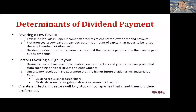Then why do firms have different dividend policies? There are certain investors who prefer low payout. Individuals in upper income tax brackets might prefer lower dividend payout since dividend taxes must be paid. Low payout can also decrease the amount of capital that needs to be raised, thereby lowering flotation costs. It is also possible that debt covenants may limit the percentage of income that can be paid out as dividends.